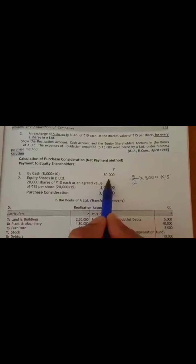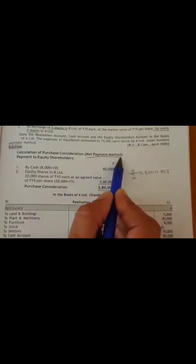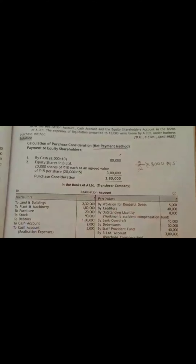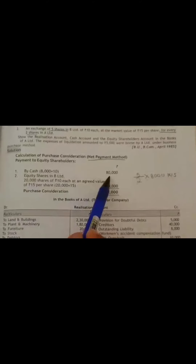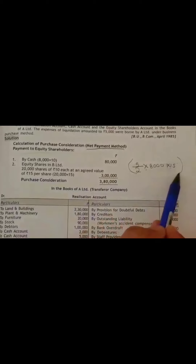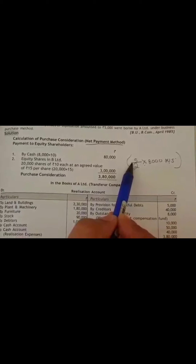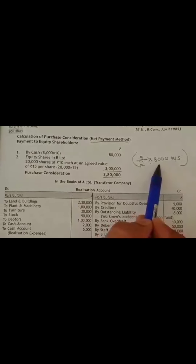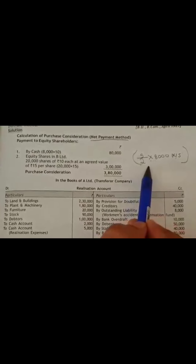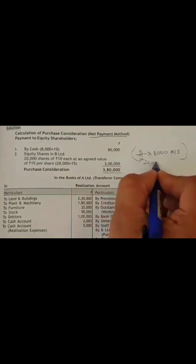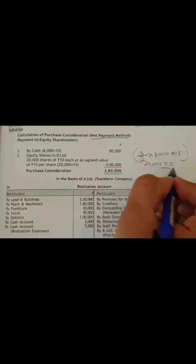This is the net payment method. By cash: Rs. 80,000. In the form of equity shares: Rs. 3,00,000. For every 2 shares, 5 shares are issued, therefore for 8,000 shares, 20,000 shares will be issued at Rs. 15 each.